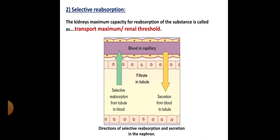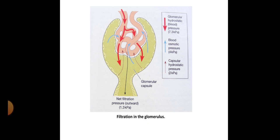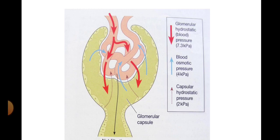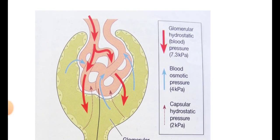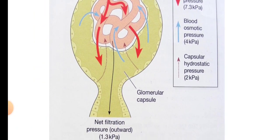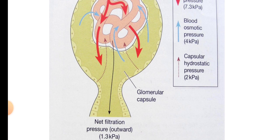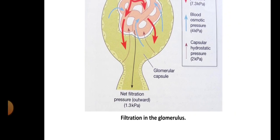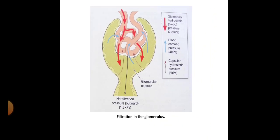The kidney's maximum capacity for reabsorption of a substance is called the transport maximum, also known as the renal threshold. Looking at the diagram, the glomerular hydrostatic pressure of 55 mmHg is opposed by the blood osmotic pressure plus capsular hydrostatic pressure, both together equaling 45 mmHg, giving a net filtration pressure of 10 mmHg, which is also 1.3 kilopascals.